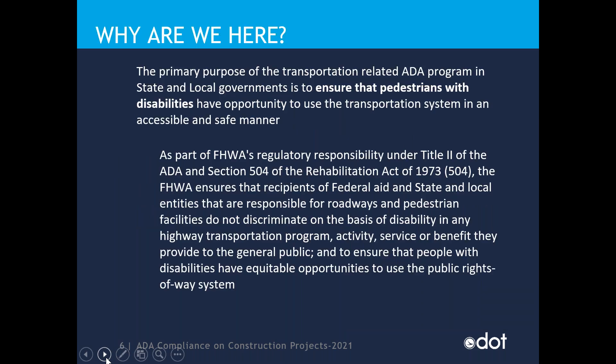The primary purpose of transportation-related ADA programs in state and local governments is to ensure that pedestrians with disabilities have the opportunity to use the transportation system in an accessible and safe manner. FHWA — the Federal Highway Administration — has a regulatory responsibility under Title II of the ADA to ensure that any recipient of federal funding that has roadways or pedestrian facilities under their jurisdiction does not discriminate on the basis of disability in any program, activity, service, or benefit provided to the general public.